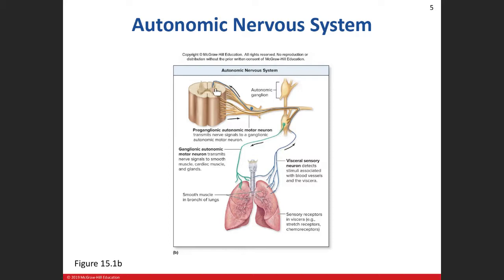The first motor neuron exits the spinal cord, goes to a ganglion somewhere, and synapses onto a second neuron. That second neuron goes directly to the effector organ. We call the first one the preganglionic neuron, and the second one the postganglionic neuron — one's before the ganglion, the other's after. The effector organs include smooth muscle in blood vessels or digestive structures, cardiac muscle, or a gland.